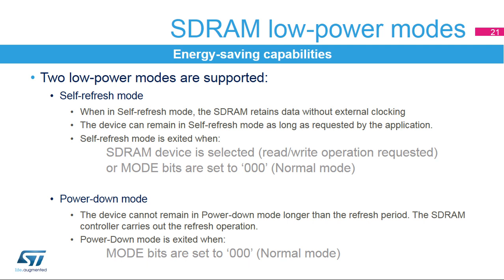For energy saving, the SDRAM controller can be configured in one of two low-power modes: self-refresh or power-down mode. When in self-refresh mode, the SDRAM retains data without external clocking and can remain in this mode as long as requested by the application. The device exits self-refresh mode when an SDRAM device is selected, a read-write operation is requested, or when mode bits are set to 0-0-0 (normal mode). The device cannot remain in the power-down state longer than the refresh period because no refresh operations are performed in this mode.